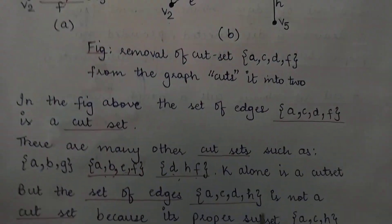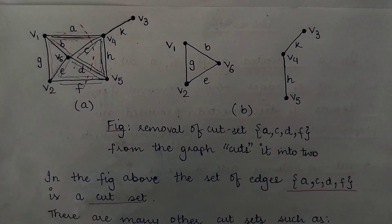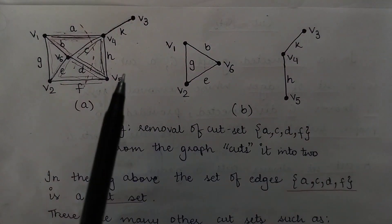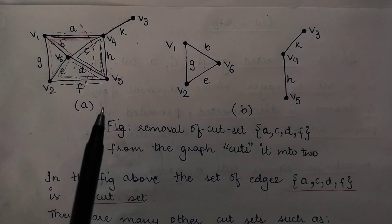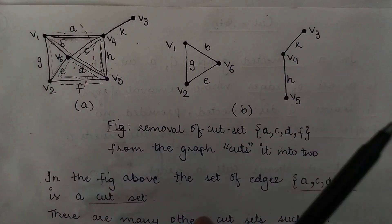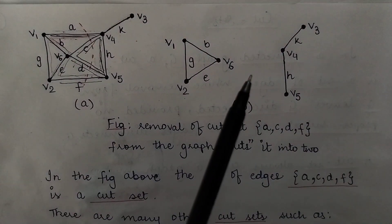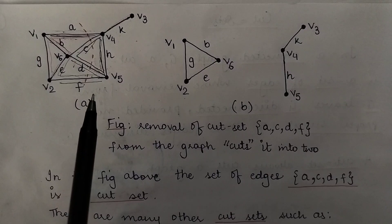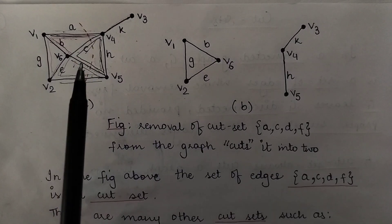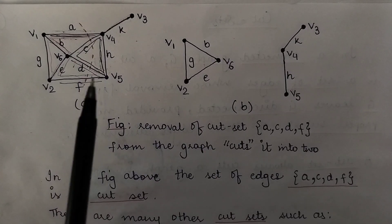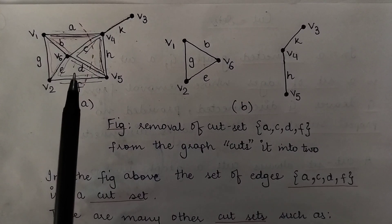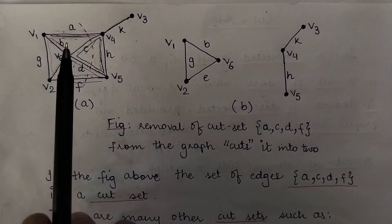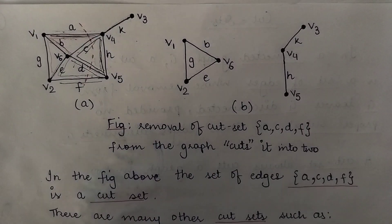You have to keep two things in mind: first, check whether the set of edges divides the graph into two separate components. But dividing the graph into two components alone is not enough to conclude it is a cut set. Second, check whether any proper subset of those edges also divides the graph into two separate components. If yes, it is not a cut set. If no proper subset does so, then it is a cut set.